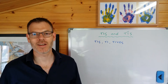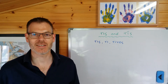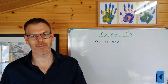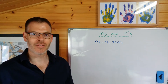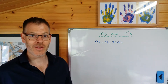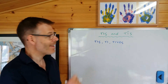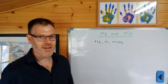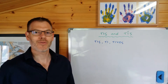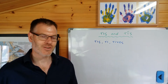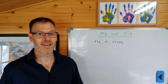Hi everybody, welcome back. We are looking today at Jeremy Duff's Elements of New Testament Greek. We're in chapter 12, the first chapter on the subject of the third declension, and we're looking today at two words which are both pronouns — both third declension pronouns — tis and tis.